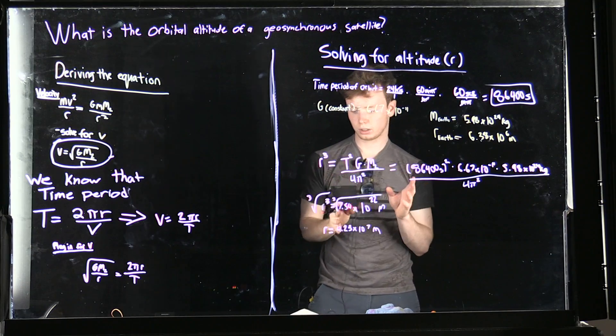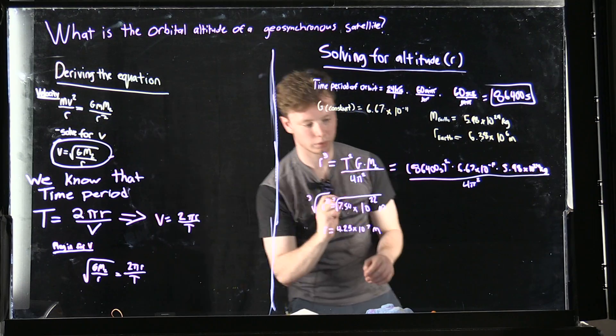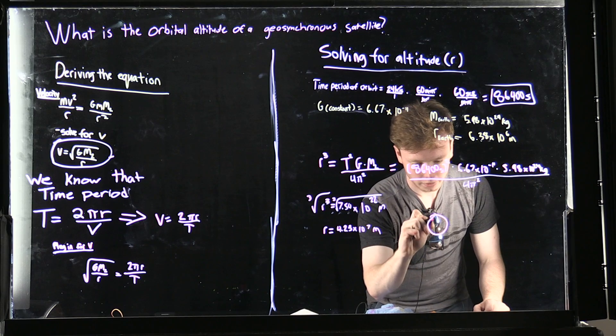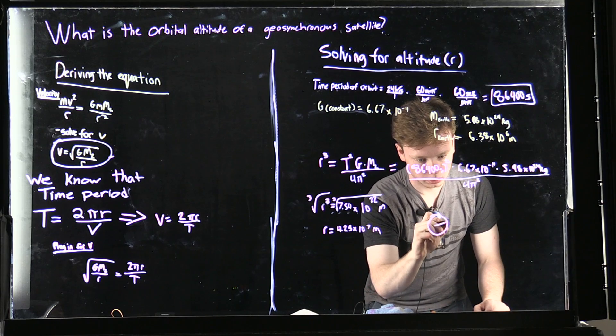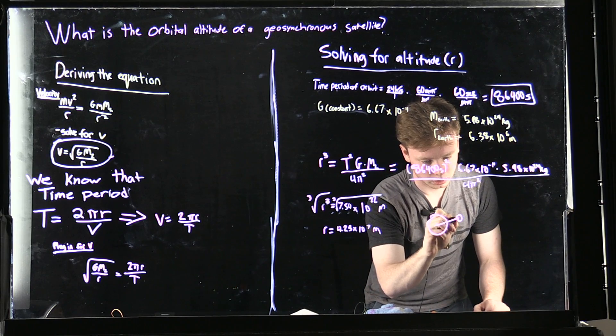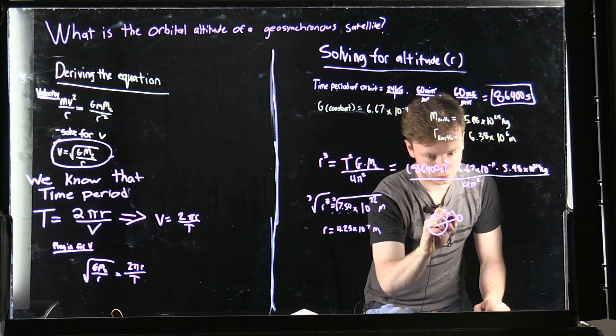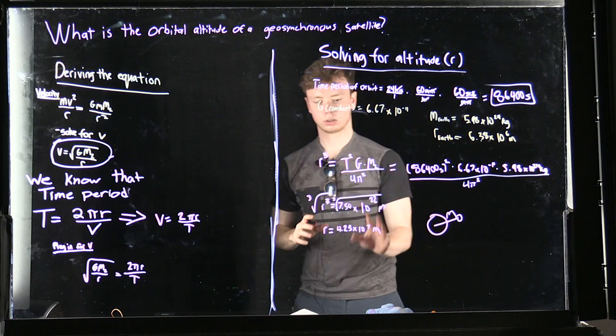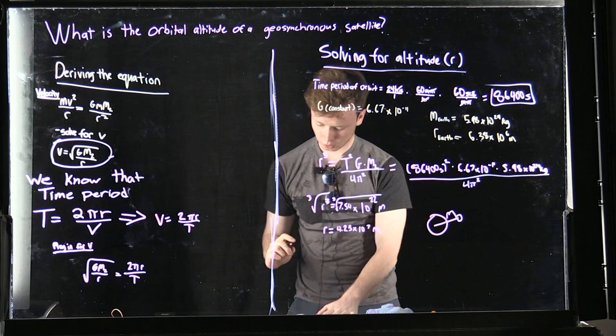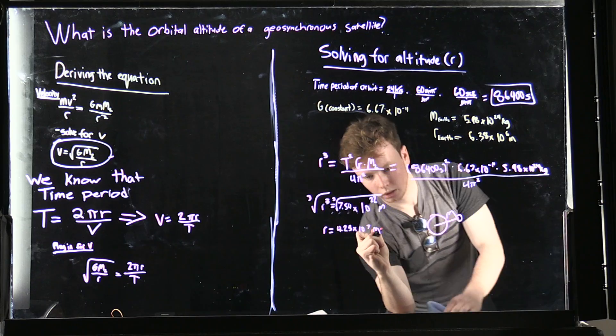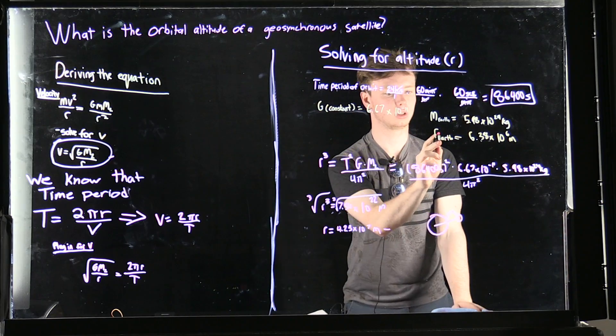But that is equal to the radius of Earth plus the radius of the satellite that we're looking for. That right there is what we're looking for. So we need to take this value and we need to subtract the radius of Earth, which is written up here.